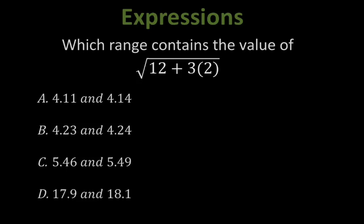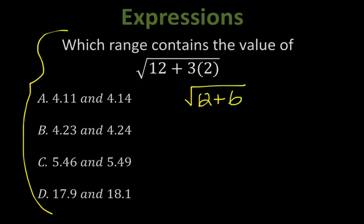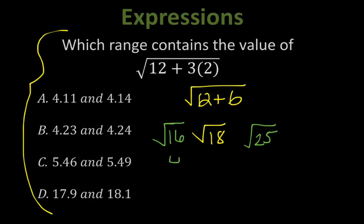Let's take a look at another one. Our first step is to simplify under the radical — multiply before doing anything else. So I get 12 plus 6, which becomes 18. Square root of 18 is between perfect squares 16 and 25, so between square root of 16 and square root of 25, meaning my number is somewhere between 4 and 5. The only option available is B.